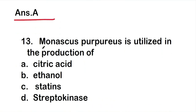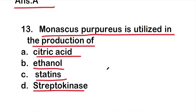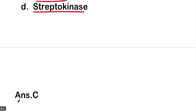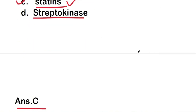Question 13: Monascus purpureus is utilized in the production of — citric acid, ethanol, statins, or streptokinase? The right answer is option C: statins. Monascus purpureus is utilized in the production of statins.